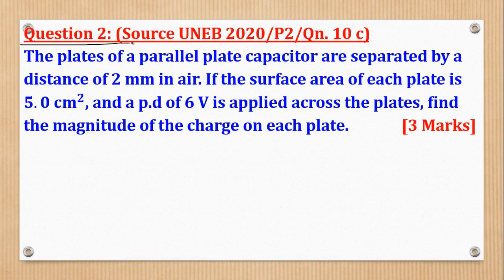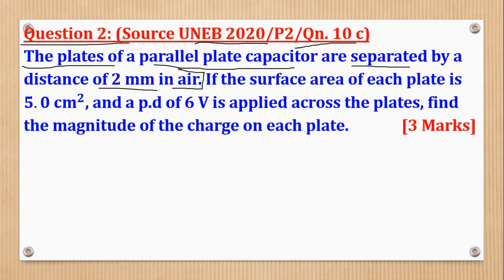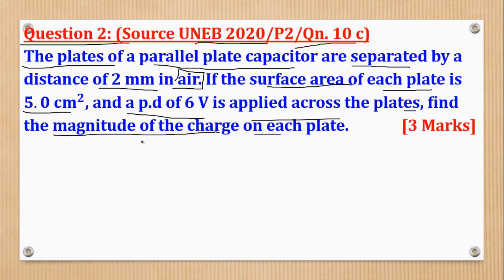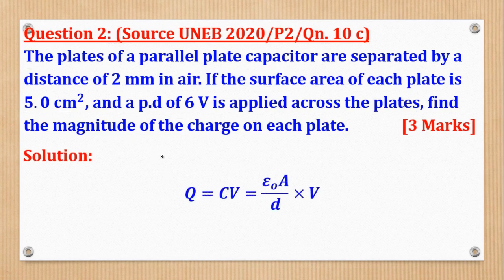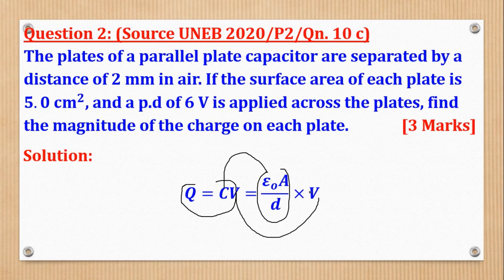So that was question 1. What about question 2? Question 2 came from UNEB 2020, that is last year, paper 2, question 10c. And says, if the plates of a parallel plate capacitor are separated by a distance of 2mm in air, if the surface area of each plate is 5cm squared, and a PD of 6V is applied across the plates, find the magnitude of the charge on each plate. So what we shall do, we shall say that charge is equal to CV. I think you remember that. Then from there, we shall remember that our C is equal to this formula which we have already derived.